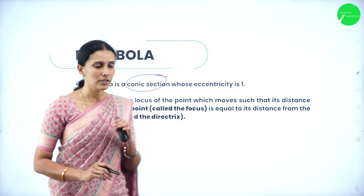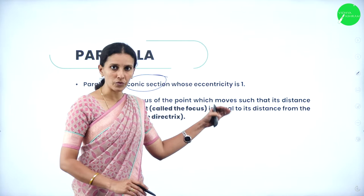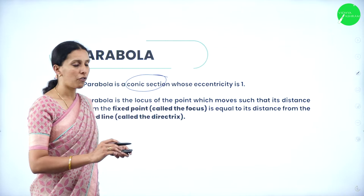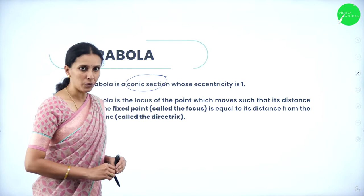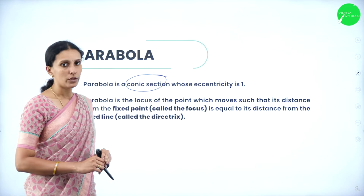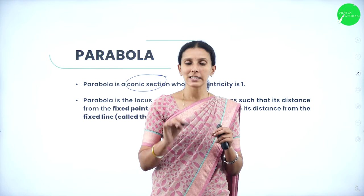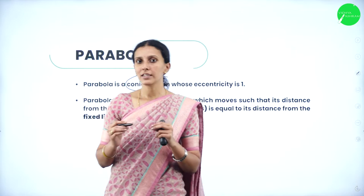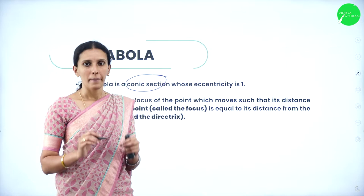A parabola is the locus of a point which moves such that its distance from the fixed point, called the focus, is equal to its distance from the fixed line, called the directrix. If the distance from a point to the focus and directrix are the same, we call it a parabola.